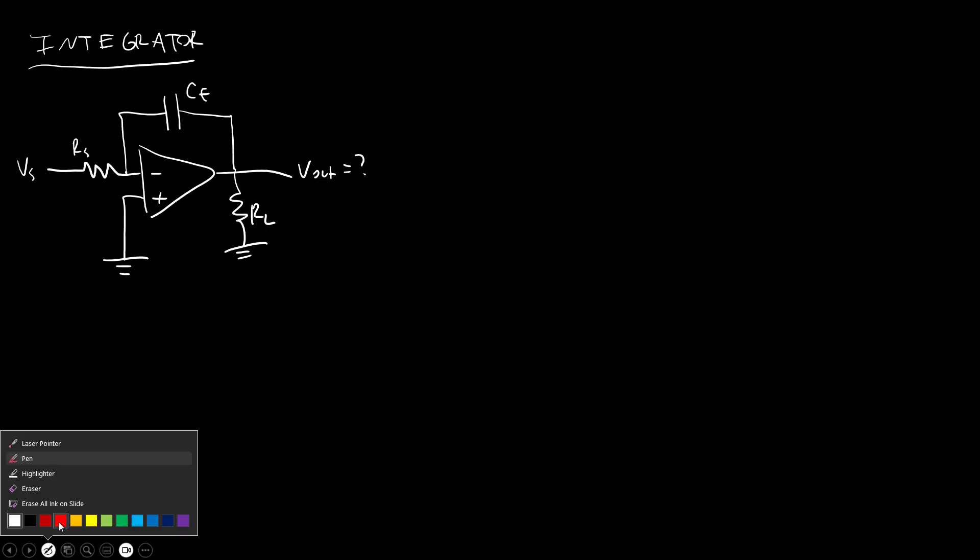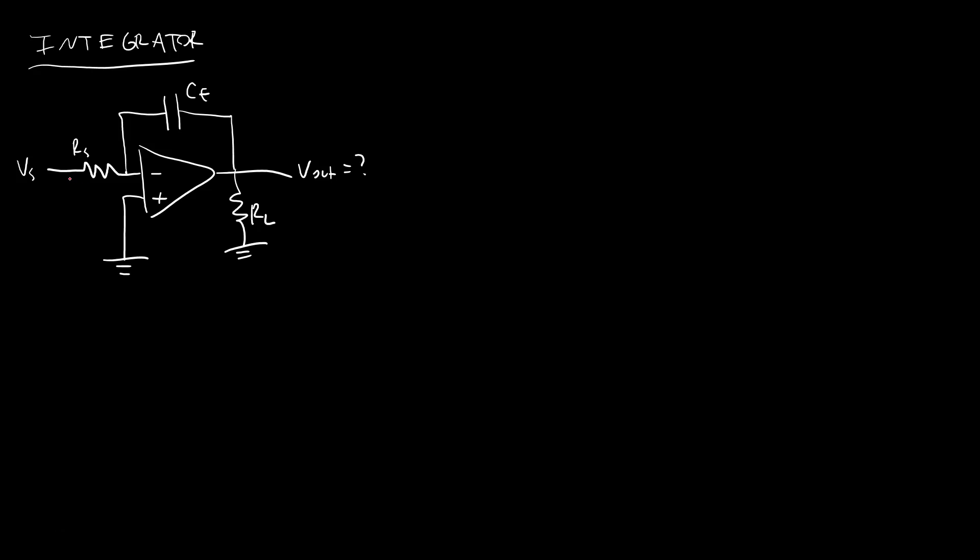And we want to ask, okay, what is Vout as a function of Vs? Just like we did for the differentiator, I'm going to mark out the passive sign convention on my passive components, mark the voltages I know, so that's zero volts, therefore this must be zero volts, and mark the currents applying KCL at this node. It gives me that the current through the source resistor must be equal to the current through the feedback capacitor because this current is zero.